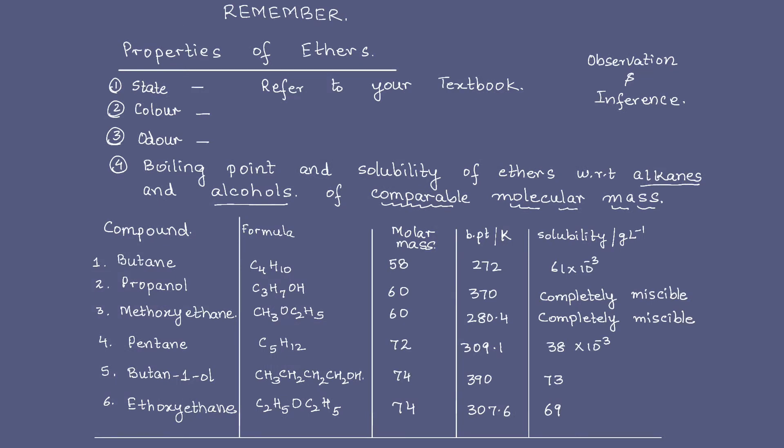I have taken the example of butane, propanol, and methoxyethane. We are going to compare these three with respect to each other because their molar mass is 58, 60, and 60. In fact, the molar mass of the alcohol and the ether are exactly equal because here one carbon has been replaced by an oxygen. They are isomers, remember?